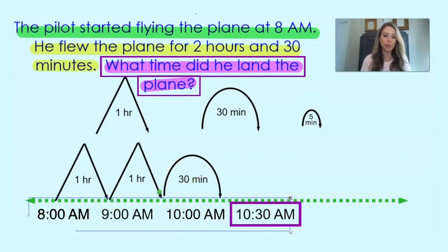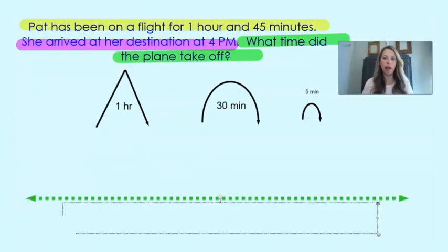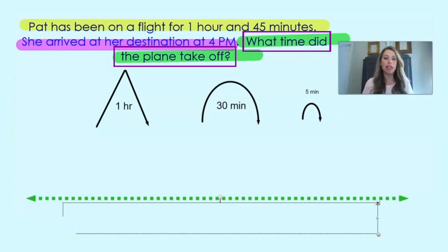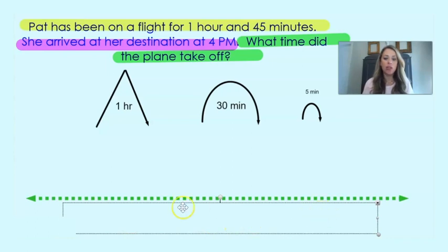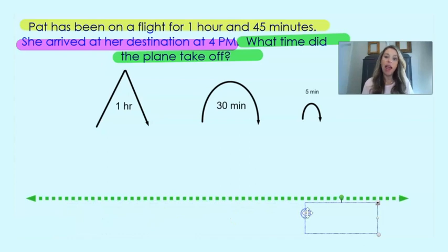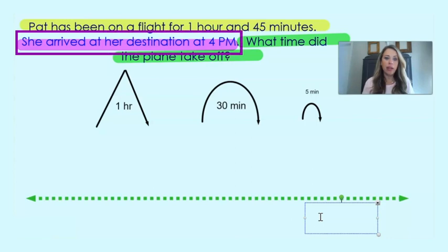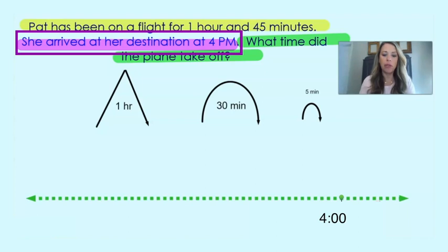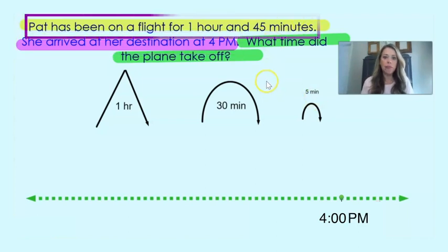Now let's head on to our last problem. With our last problem, we know that we are solving for the start time — what time the plane took off. In this case, we're actually going to start all the way on the right side of our number line and work backwards. We know that Pat arrived at her destination at 4pm, so we're going to write 4pm on our number line, and she had been on that flight for 1 hour and 45 minutes.